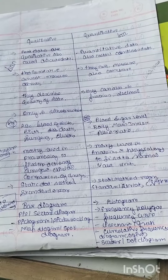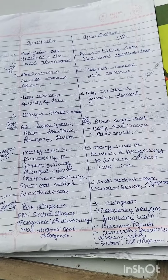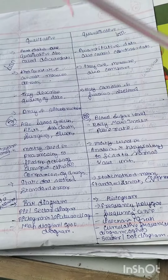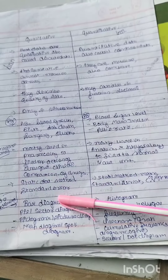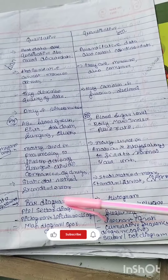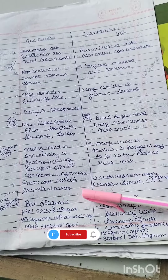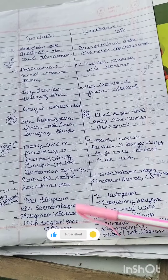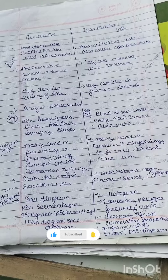Graphs are very important. For qualitative data, the graphs used include bar diagrams, pie and sector diagrams, pictograms, map diagrams, and spot diagrams.